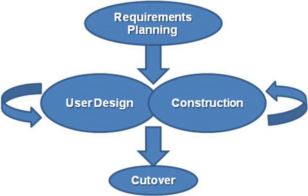In software engineering, a software development process is the process of dividing software development work into distinct phases to improve design, product management, and project management. It is also known as a software development life cycle. The methodology may include the pre-definition of specific deliverables and artifacts that are created and completed by a project team to develop or maintain an application. Most modern development processes can be vaguely described as agile.